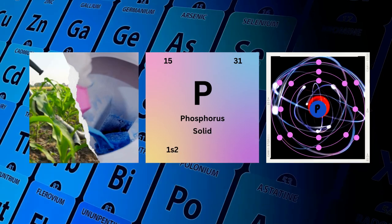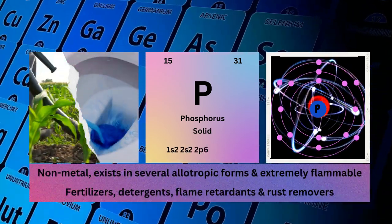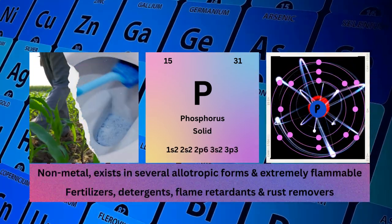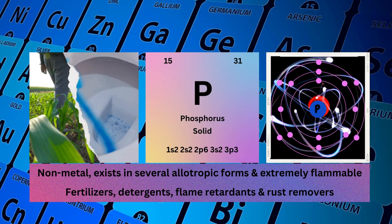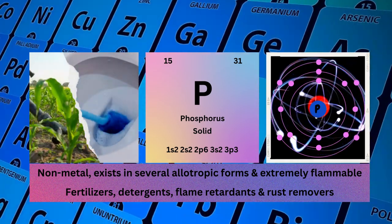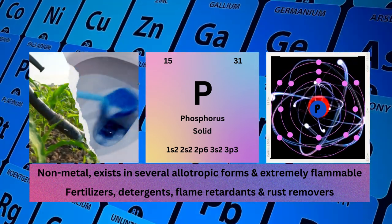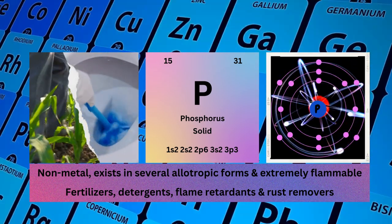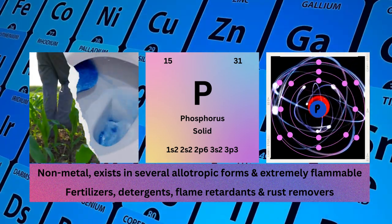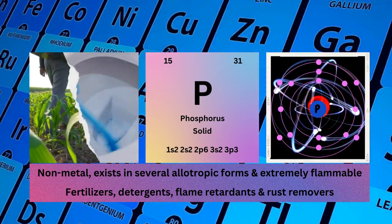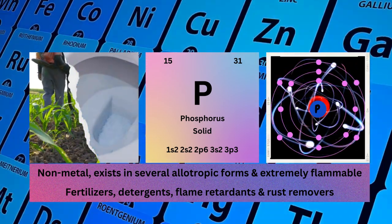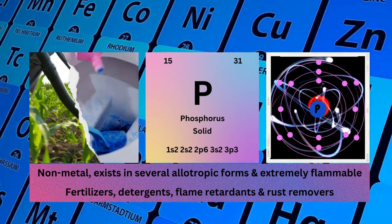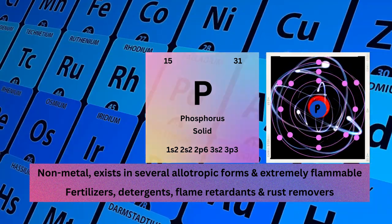Phosphorus, atomic number 15, mass number 31, symbol P, state solid, electronic configuration 1s²2s²2p⁶3s²3p³. Physical properties: non-metal in several allotropic forms and extremely flammable. Phosphorus used as fertilizers, detergents, and flame retardants.